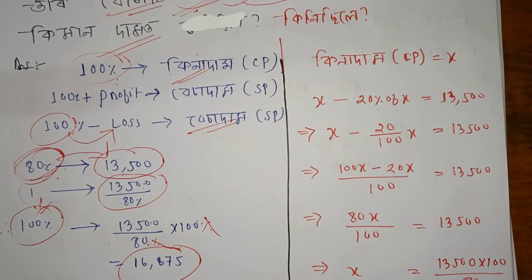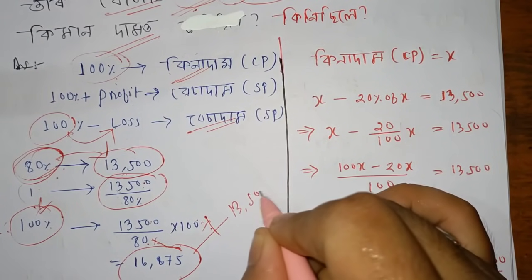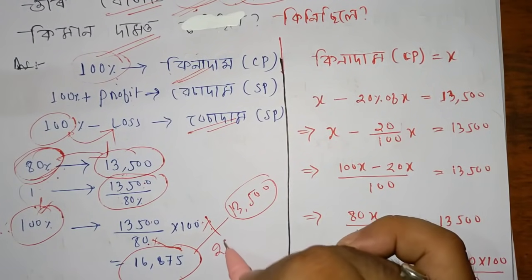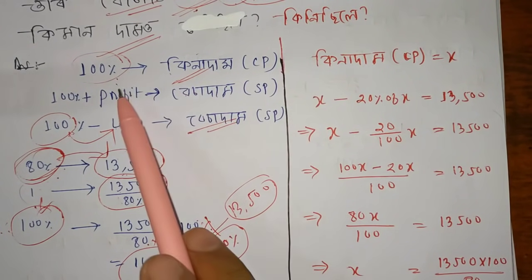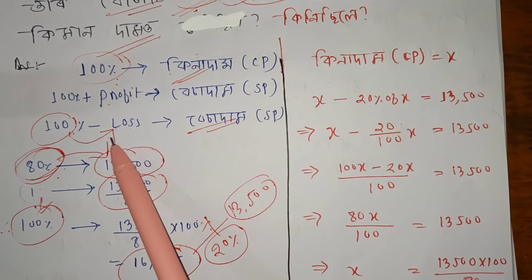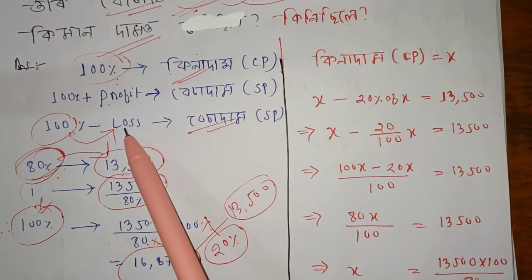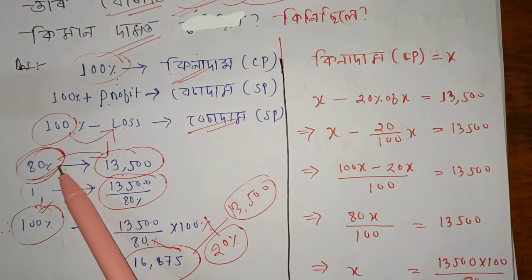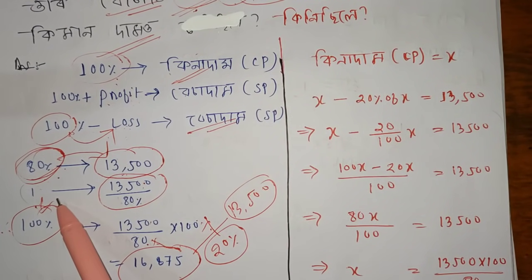The cost price is $16,875, and the loss amount is $3,125. So the original cost was $20,000 and the selling price was $13,500, giving us a loss. The market profit is less than 100%, confirming the loss scenario. So the value of the cost price is $16,875.